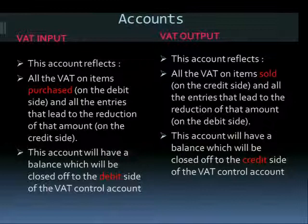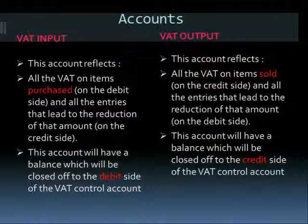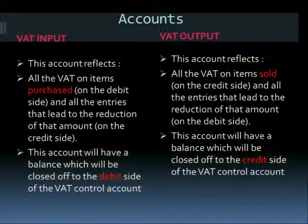Coming to VAT output — this reflects all the VAT on items sold on the credit side, and all entries that lead to the reduction of that amount on the debit side. This account will have a balance which will be closed off to the credit side of the VAT control account.